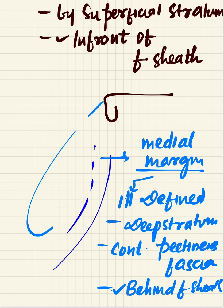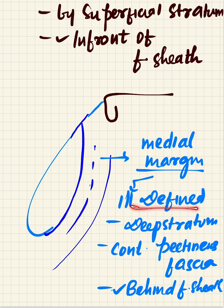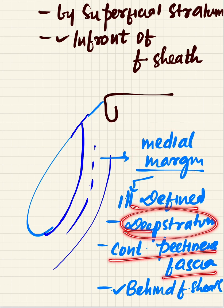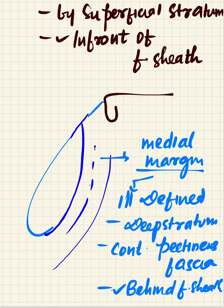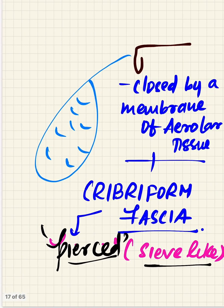The medial margin is a bit ill-defined, made up of the deep stratum. It continues with the fascia covering the pectineus muscle — a muscle forming the floor of the femoral triangle — and is present behind the femoral sheath.